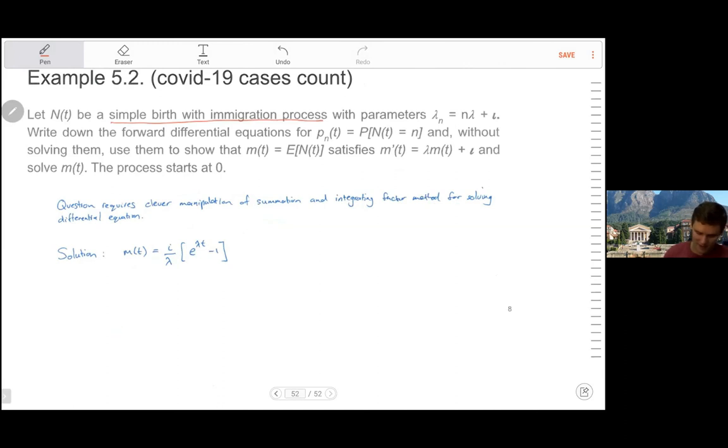But the rate completely depends on the state that you're counting from. So you count to state two with lambda. You count to state two with two lambda, three lambda, four lambda. So as you're increasing, the chance of counting to the next number increases. That counts for the simple birth part.